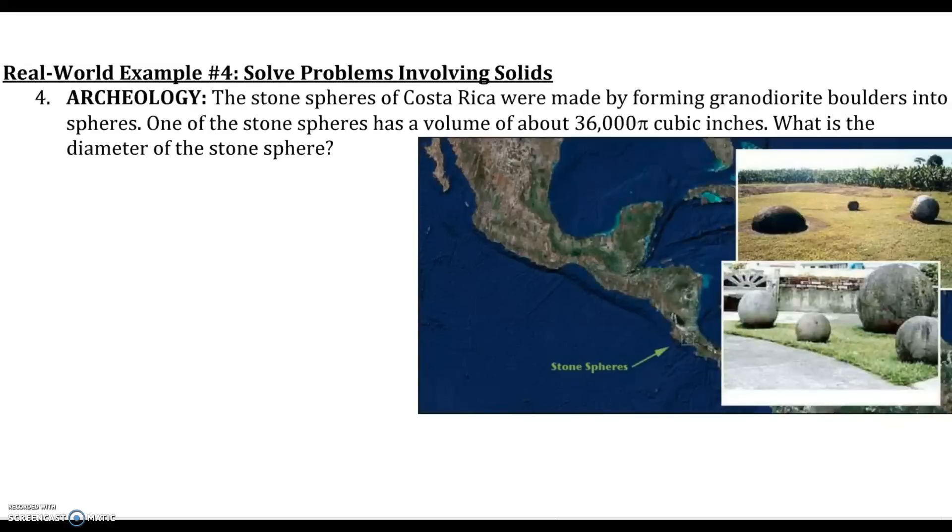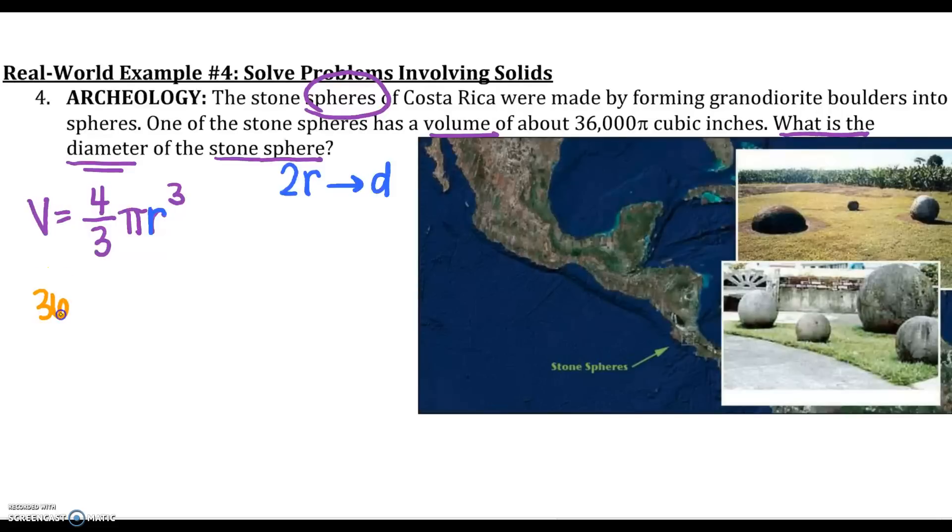All right, last one. The stone spheres in Costa Rica were made by forming boulders into spheres. One of the stone spheres has a volume of about 36,000π cubic inches. What is the diameter of the stone? Well, we know that one, it's a sphere. So, and I'm talking about volume. So my volume formula for a sphere is 4/3πr³. And I know the only thing I can really get out of this volume is my radius. But I know how to go from radius to diameter. I'm just going to multiply my radius by 2.